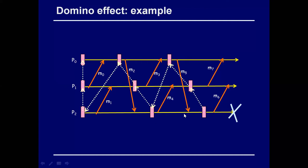This is called a cascading rollback. In the worst case, the cascading rollback goes all the way back to the initial state of every process — that is the domino effect. Even though multiple checkpoints were taken, uncoordinated checkpointing can result in every process rolling back to its initial state, making that the recovery line.